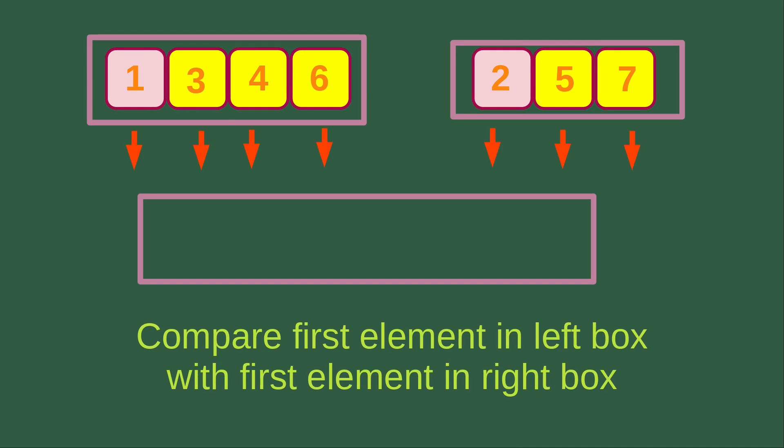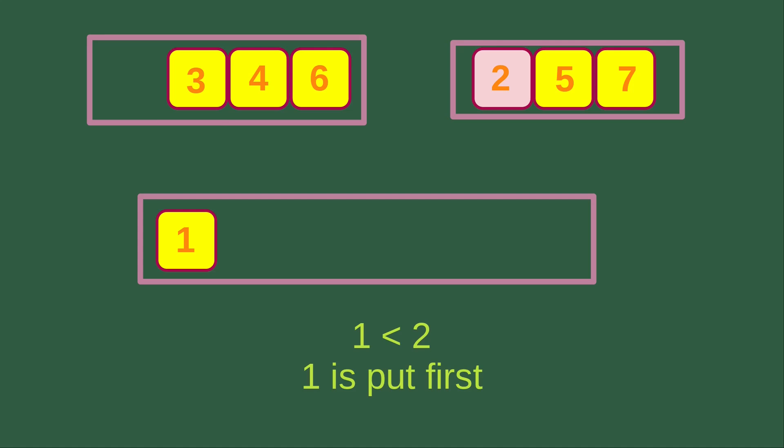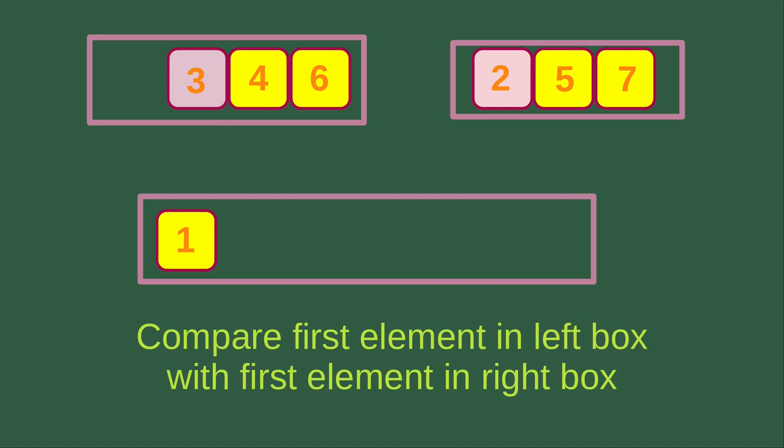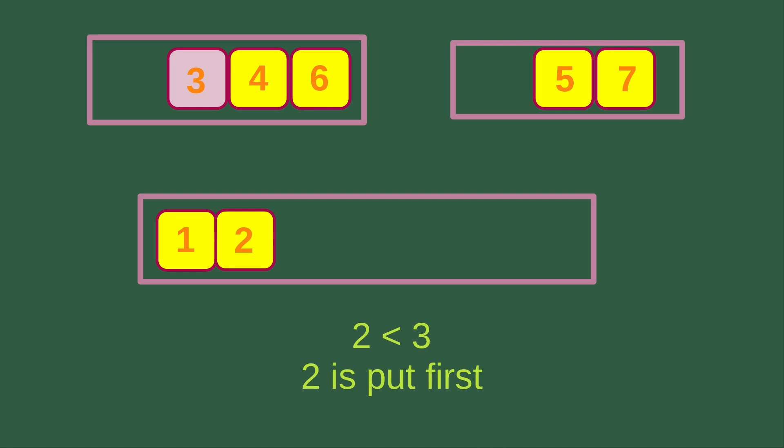Since we have already sorted both blocks, we can do the merge function now. We compare the first element in the left box with the first element in the right box. From the left box we have 1, and from the right box we have 2. Since 1 is smaller than 2, we put 1 into the big rectangle. Then we compare again: the left box is 3 and the right box is 2. Since 2 is smaller than 3, we put 2 into the larger box.